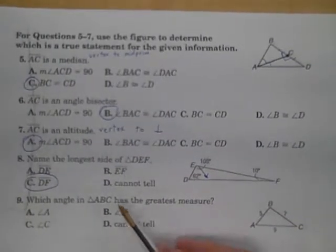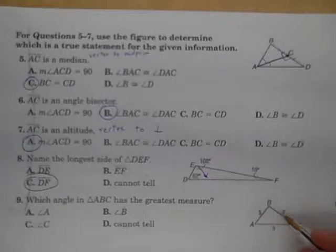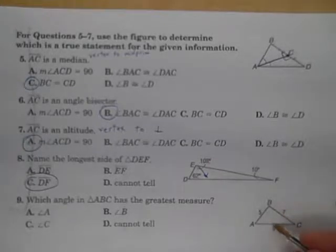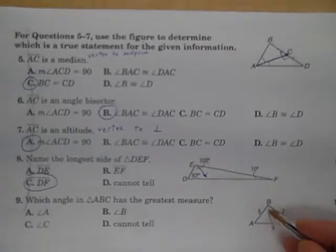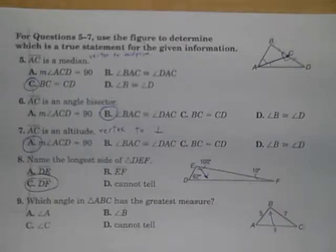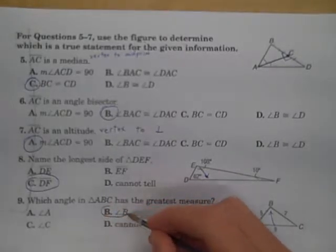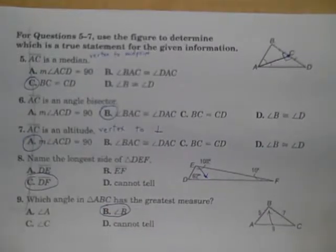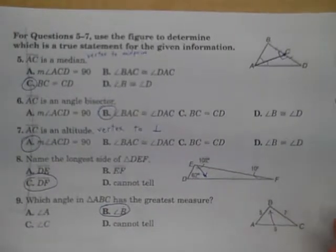Now which angle has the greatest measure on number 9? Well, the longest side AC is the longest side, and its angle that's opposite that is angle B. And that's it. That's all we've got to do there.